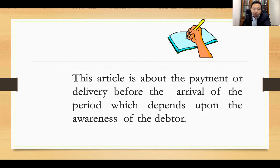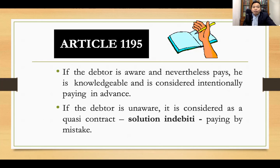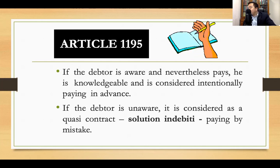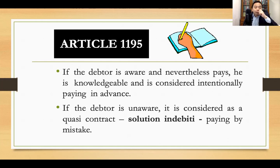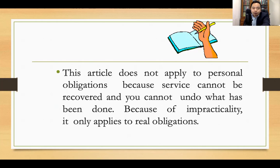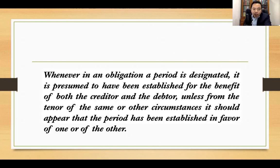Article 1195 talks about payment or delivery before the arrival of the period, which depends upon the awareness of the debtor. If the debtor is aware and nevertheless pays, he is knowledgeable and considered as intentionally paying in advance — the debtor is deemed to have waived the period in his favor and the payment is considered intentional. If the debtor is unaware of the period, it is considered a quasi-contract of solutio indebiti — payment by mistake — which entitles the obligor to recover what has been paid. Take note that Article 1195 does not apply to personal obligations because service cannot be recovered and you cannot undo what has been done — it applies only to real obligations.